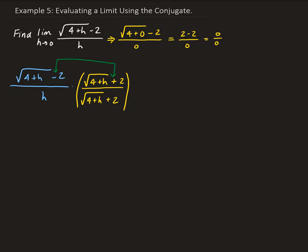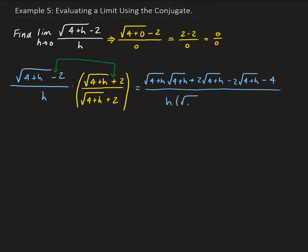Now we multiply everything out. For the top, we get square root of 4 plus h times square root of 4 plus h, minus 2 times square root of 4 plus h, plus 2 times square root of 4 plus h, and then minus 4. All this is divided by h times square root of 4 plus h plus 2.